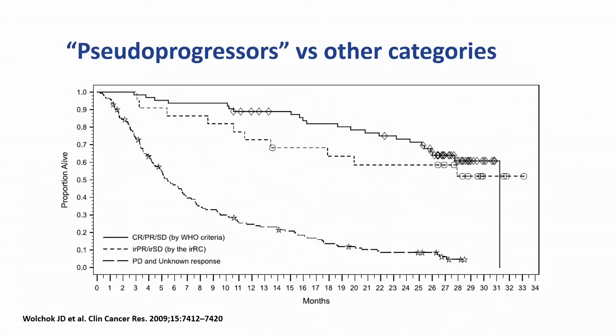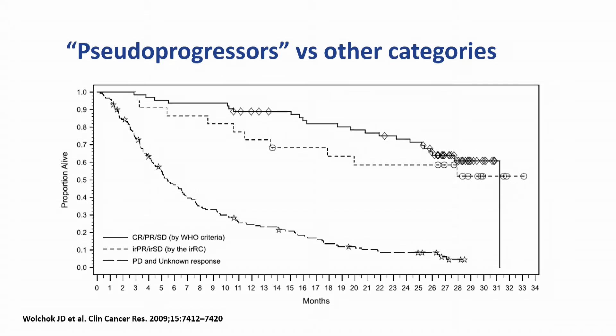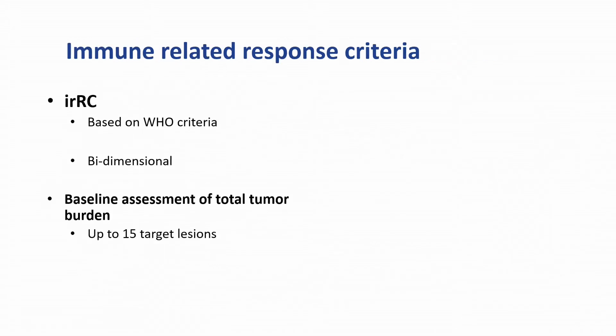Is it important clinically and radiologically to be able to identify these pseudoprogressors? The answer is yes. From a melanoma cohort, the top line represents those with a conventional response to immunotherapy, the middle line those who progressed, and the hashed line the pseudoprogressors who had an initial increase followed by decrease. At about three years' follow-up, the pseudoprogressors have a similar survival to those who had a conventional imaging response. To try and identify those patients, the so-called immune-related response criteria were developed.